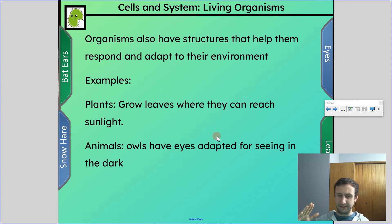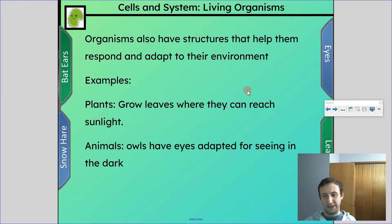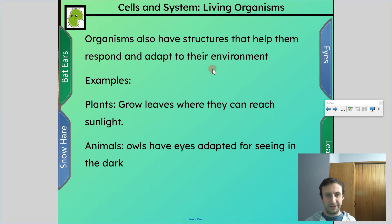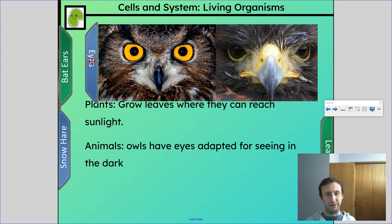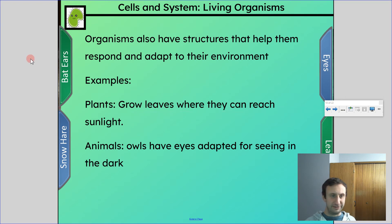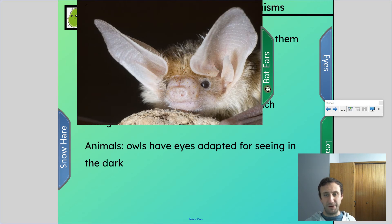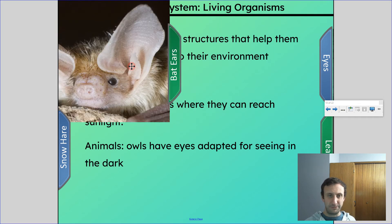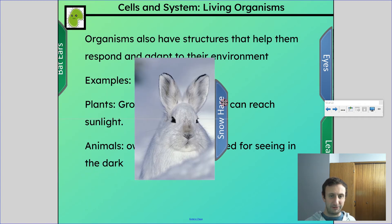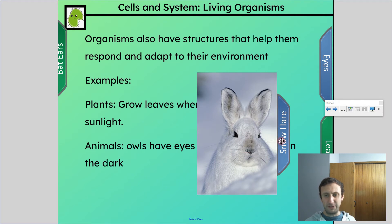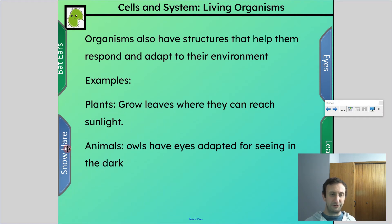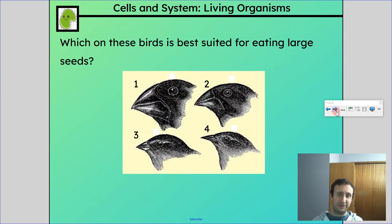Plants will also straighten out if they're sideways in order to better adapt to their environment. For animals: owls have eyes adapted for seeing in the dark — super large eyes to see in very low light conditions. Bats have massive ears because they use echolocation to find their prey, needing those massive ears to tell where things are. Snow hares adapt by changing their fur color to white so they're camouflaged — all ways that things respond and adapt to their environment.